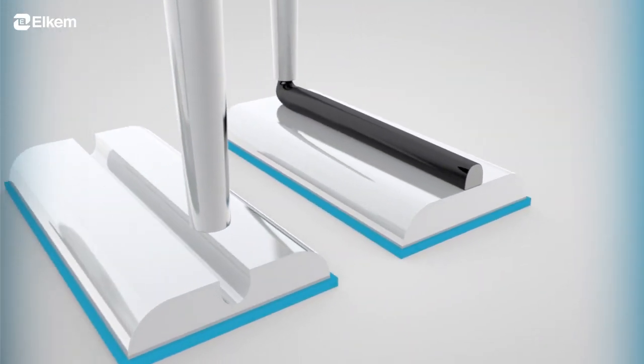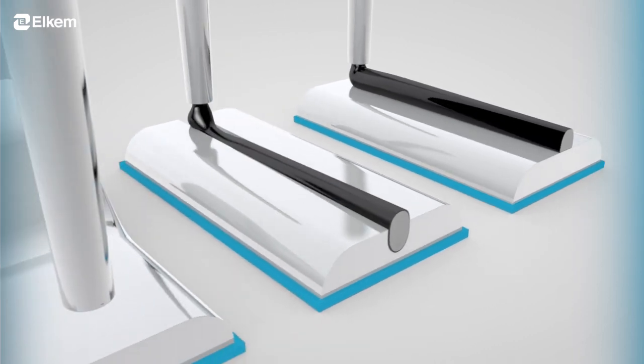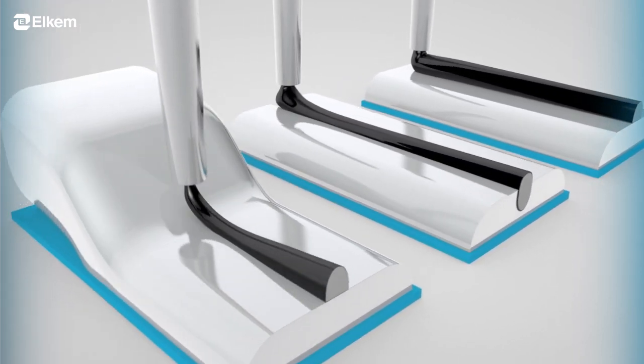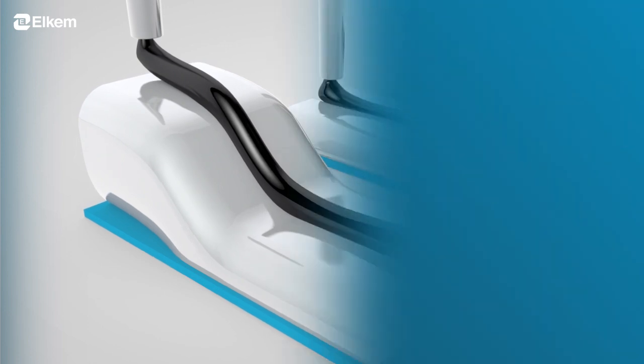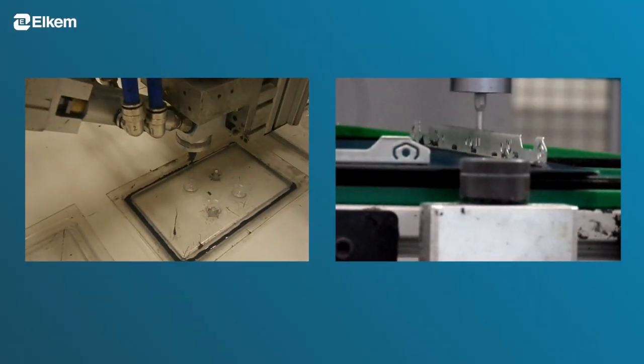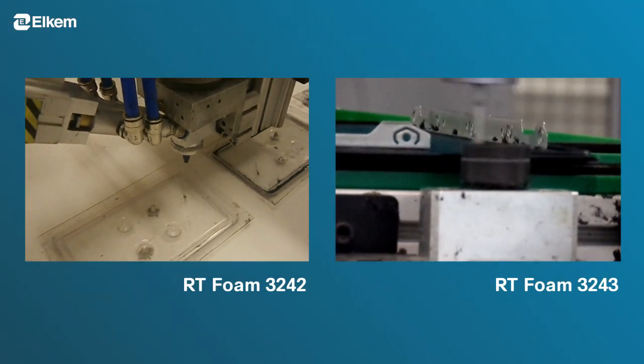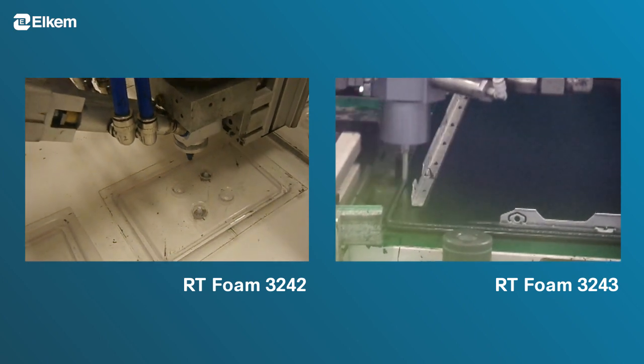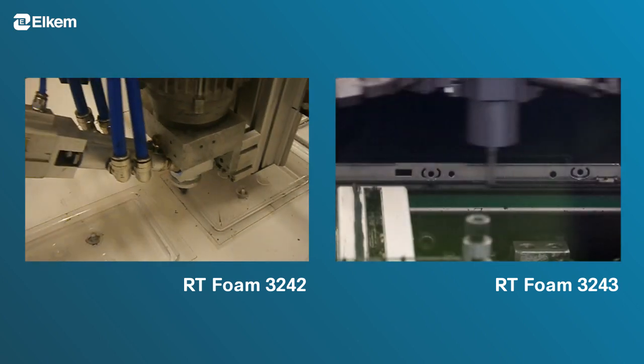Processing properties such as reactivity and flow fit the required needs for 2D and 3D applications. The BlueSill RT Foam 3242 and 3243 are currently used on fully integrated production lines at several different customers.